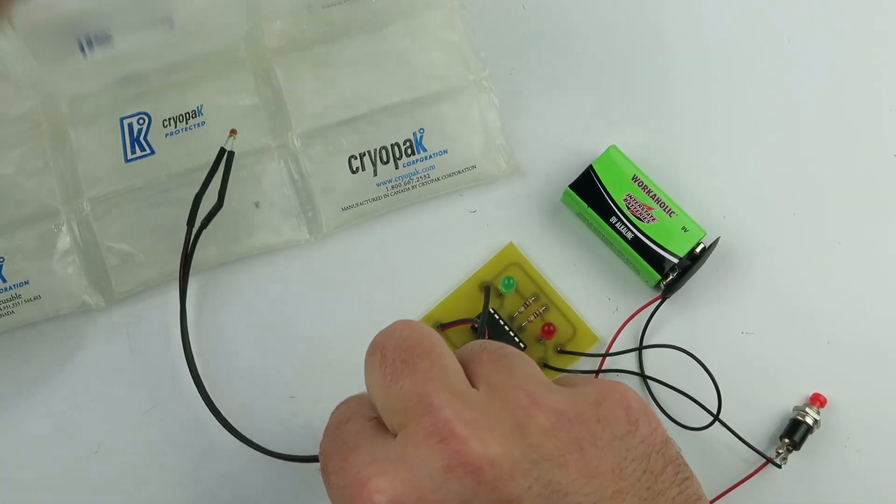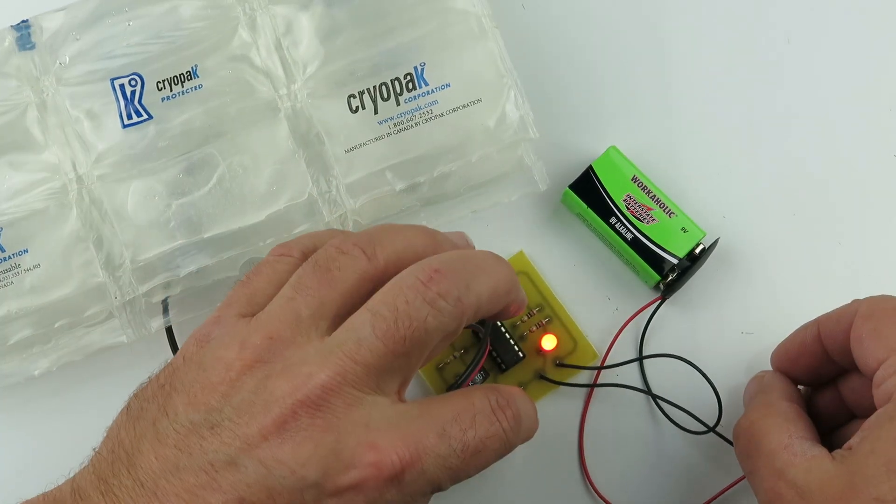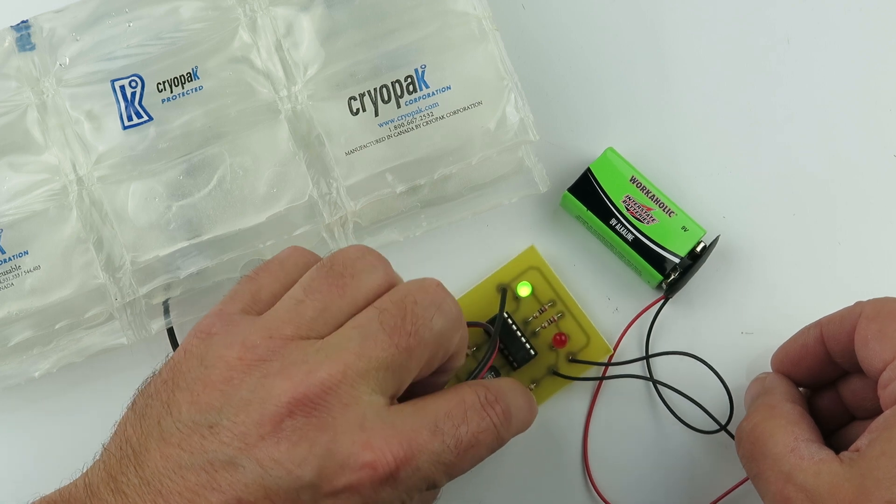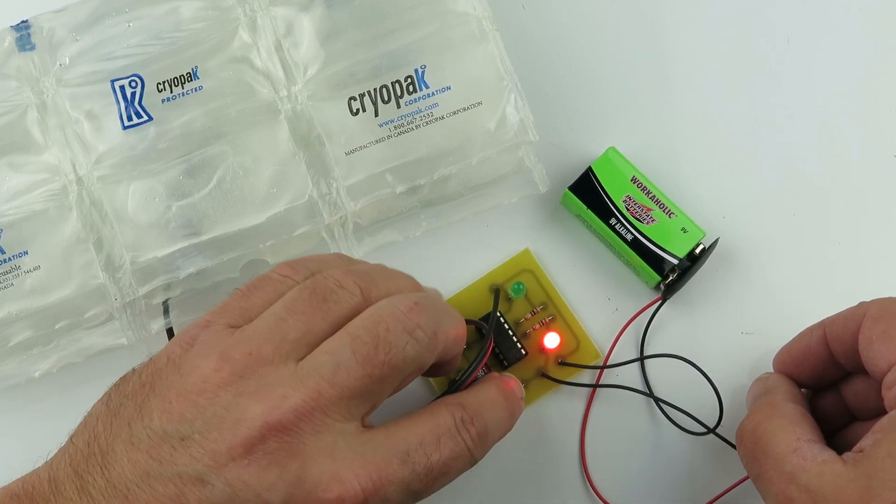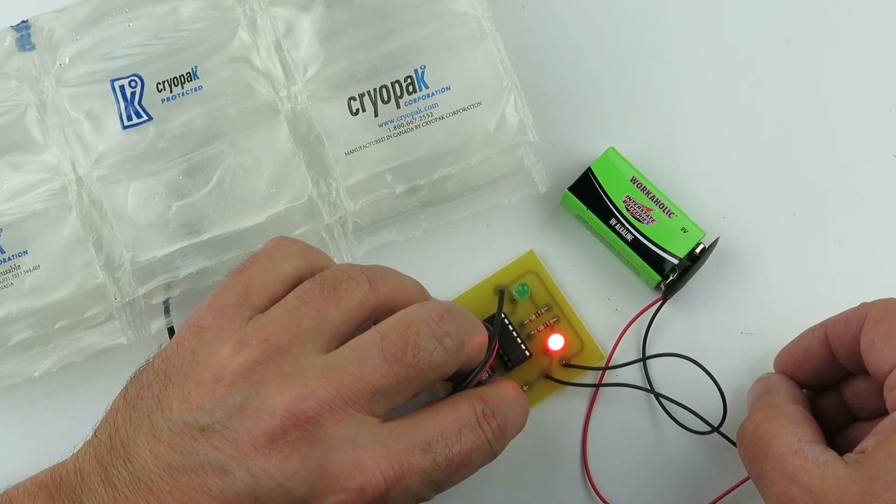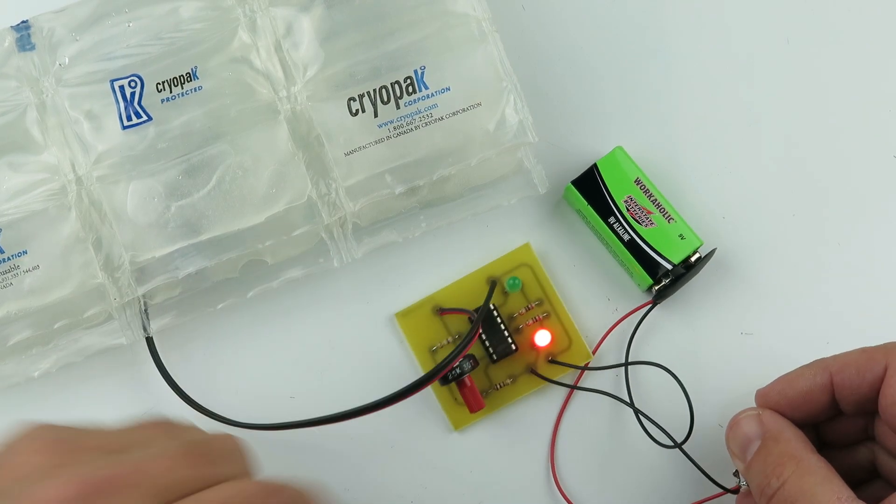So when you first start calibrating this, and then you get it right to the red, turn it a little bit more. Give it another little bit of a turn. There we go. That seemed to work for me.